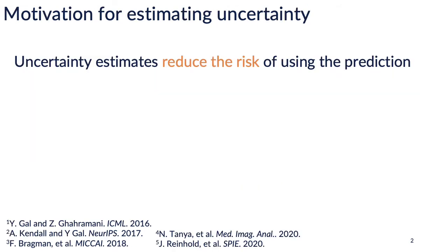Why are we interested in estimating uncertainty in an image translation task? The main benefit is that it provides more information about the prediction — specifically about the trustworthiness of the prediction. An example where uncertainty would reduce risk is if there was an anomaly in a new test image; we would expect uncertainty to be high in the anomalous area. A naive risk reduction strategy would then be to not use the predicted image because of the presence of high uncertainty.